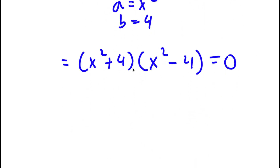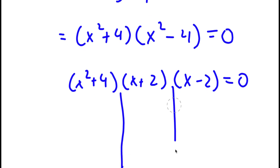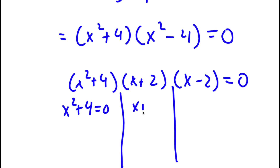Now, x to the power of 2 minus 4 is actually the same thing as x plus 2 times x minus 2. So now I have x to the power of 2 plus 4 times x plus 2 times x minus 2 is equal to 0. This gives me three equations: x to the power of 2 plus 4 is equal to 0, x plus 2 is equal to 0, and x minus 2 is equal to 0.